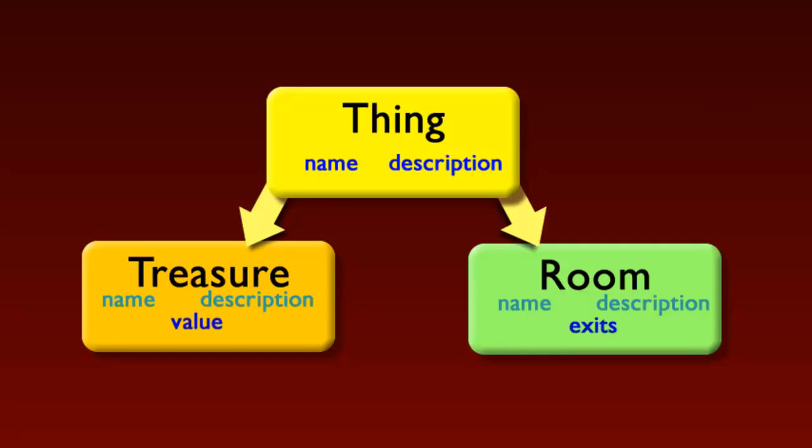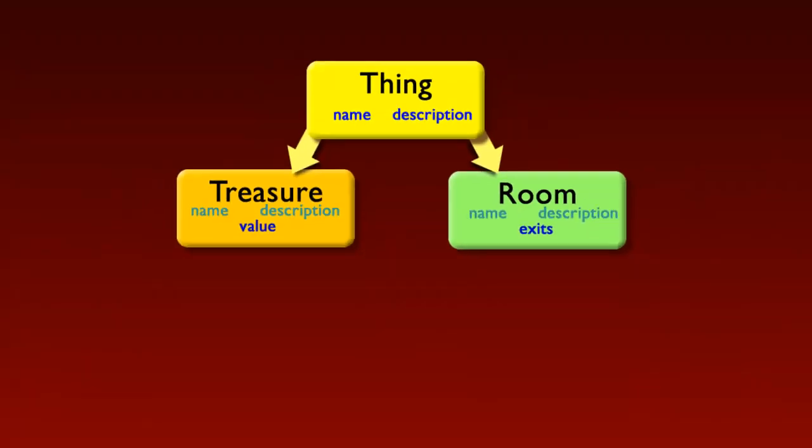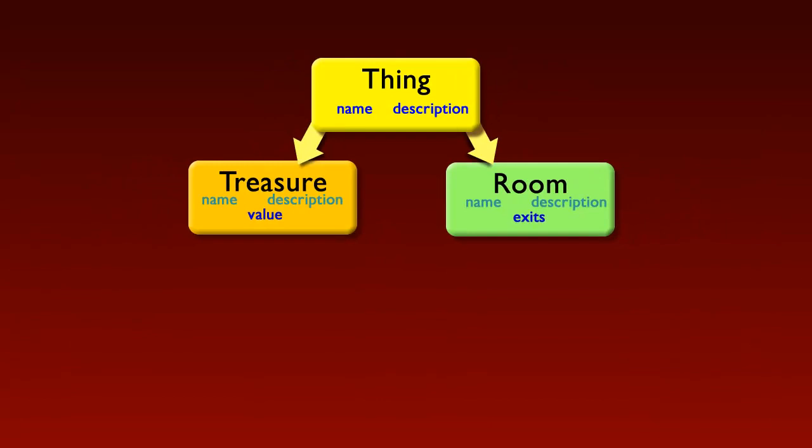The same is true of the Room class. It descends from Thing, so it automatically gets a name and a description, and it adds on one additional attribute, namely the exits to the room.